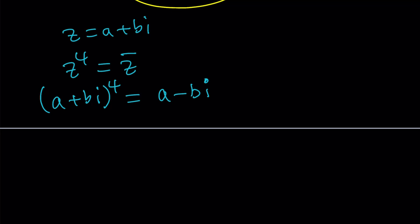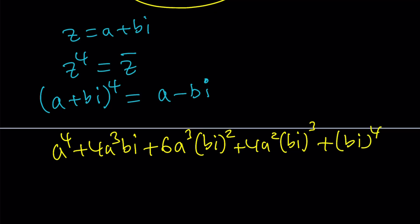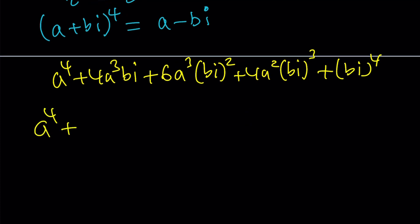Now how do you solve for z? You have to solve for A and B. So let's use the binomial theorem. This is going to give us A to the fourth plus 4A cubed B I plus 6A squared B I squared plus 4A B I cubed plus B I to the fourth power. We just use the binomial theorem. Nothing special but we've got to simplify this.